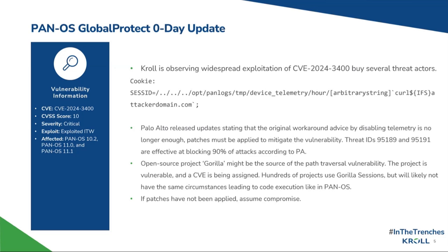The latest update we're tracking is reports that an open source project called Gorilla may be the source of the path traversal vulnerability. The Gorilla project is vulnerable to that path traversal, and a CVE is apparently being assigned. Hundreds — probably thousands — of projects use the Gorilla sessions project. But the circumstances about getting code execution are almost certainly not going to be the same across those projects, although the path traversal does exist. It's how the Gorilla library itself is being implemented that causes the remote code execution.